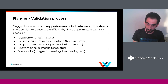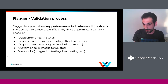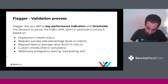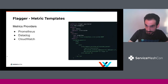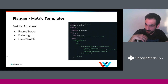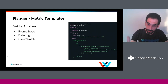You can also define custom checks with metric templates. There is a custom resource called the metric template where you can create queries in PromQL for Prometheus, for Datadog and CloudWatch — and we're looking at implementing more metric providers. The idea is that you define metrics for things like measuring latency across all your apps, and then you can reuse a metric template for multiple releases of multiple applications.